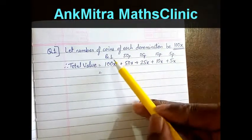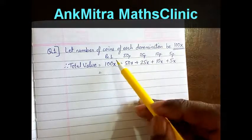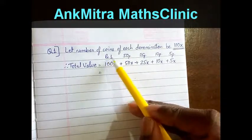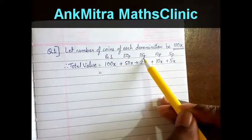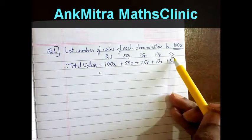In this question we have 5 different denominations of coins starting from 1 rupee, 50 paise, 25 paise, 10 paise and 5 paise.